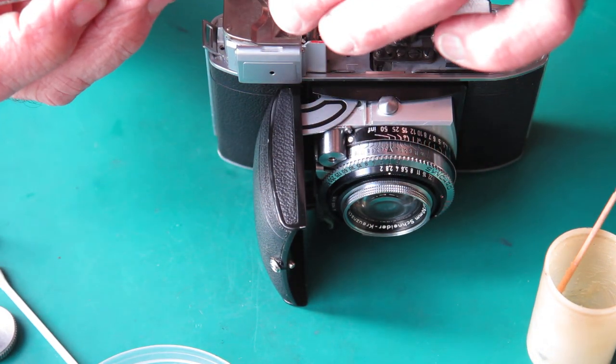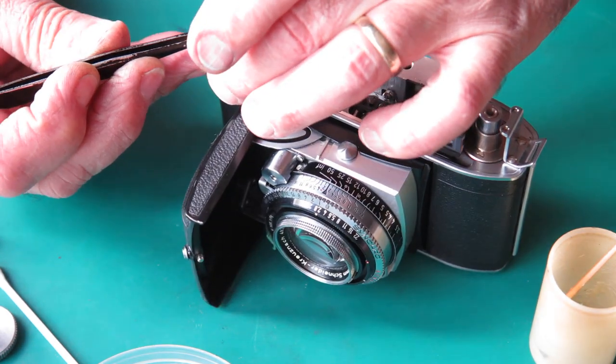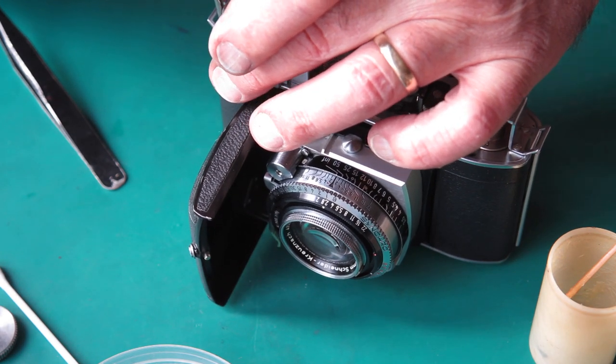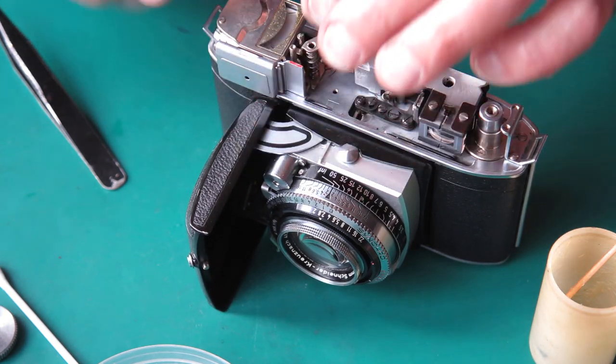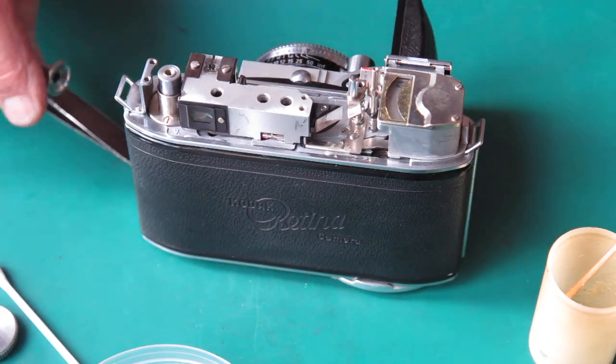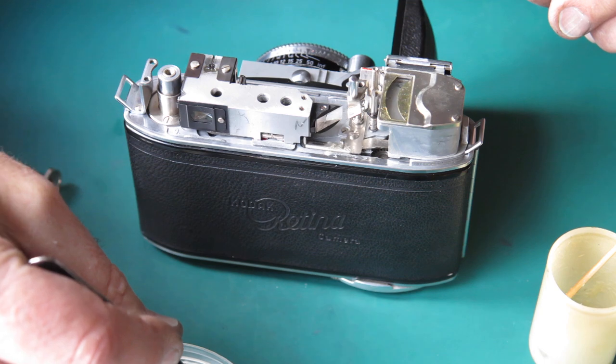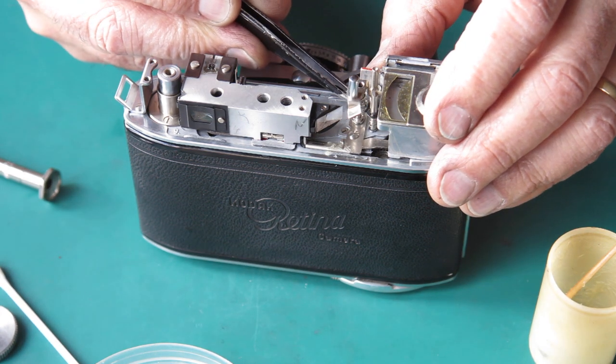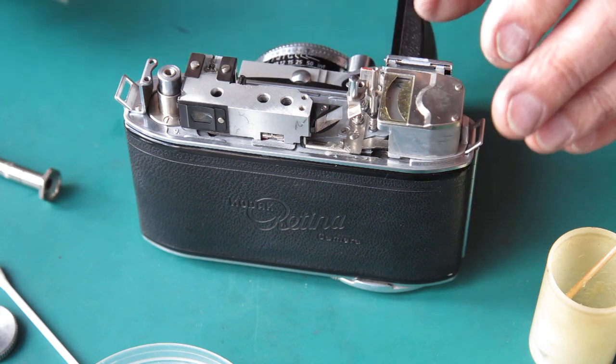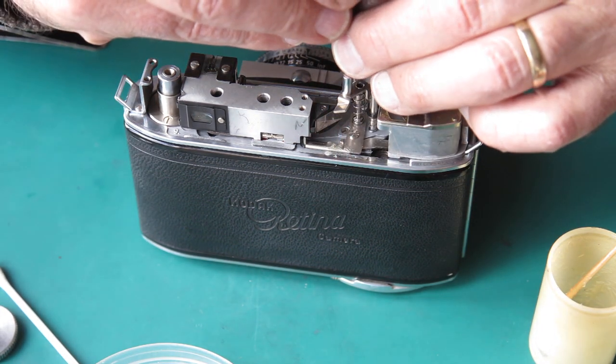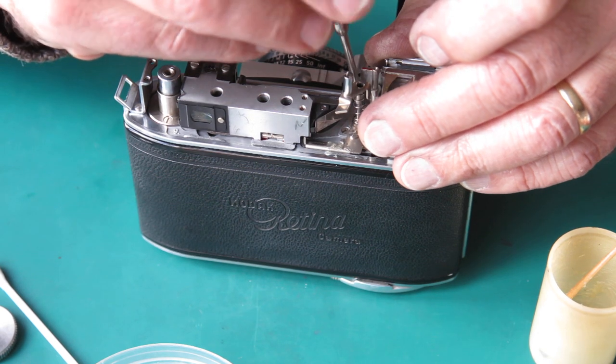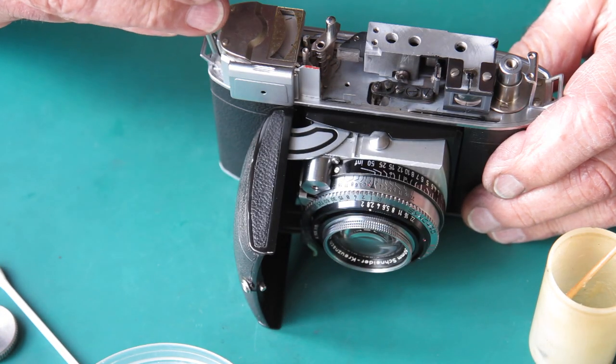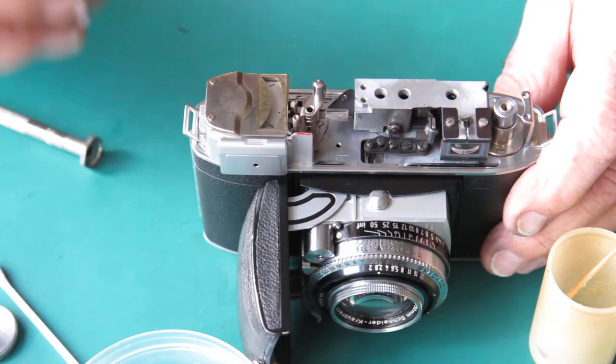All right, now my exposure meter can go on. The longest screw at this end of the housing also runs through the strap lug. The shortest screw goes at this end. Check that all looks okay. Put the shutter release button on.